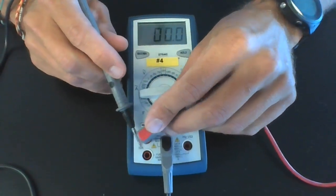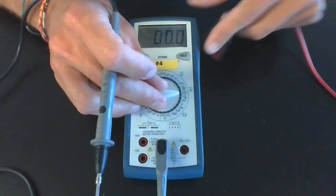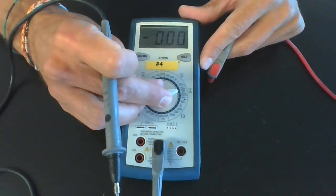Finally, if you want to measure larger current, then you're going to move it to the 10 amps, and you're going to switch it like this.